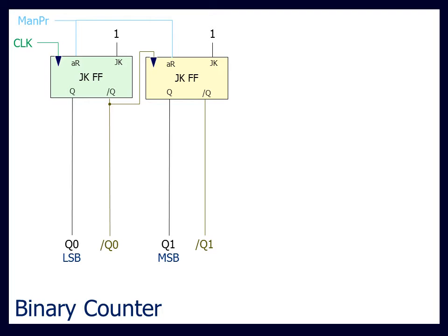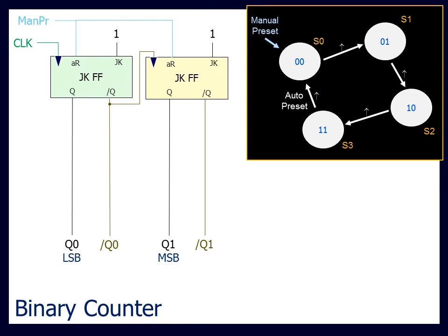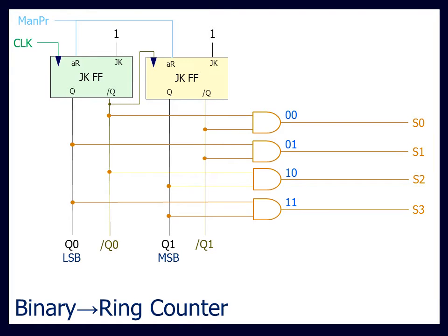For a 4-state sequence, we will need a 2 flip-flop counter. This counter will count through the states following the binary counting sequence. To generate the output sequence, we first convert the binary counter into a ring counter.